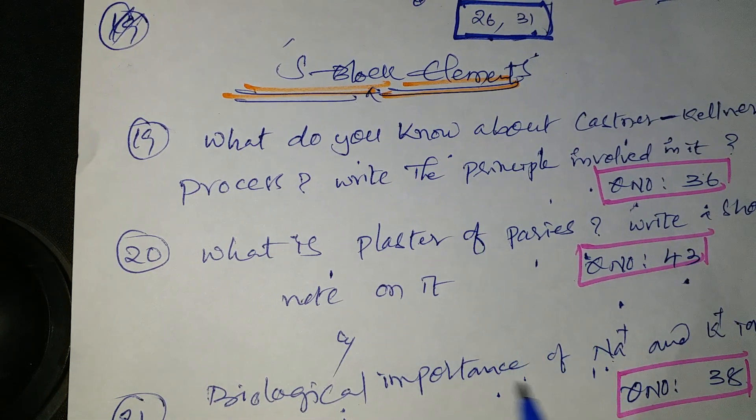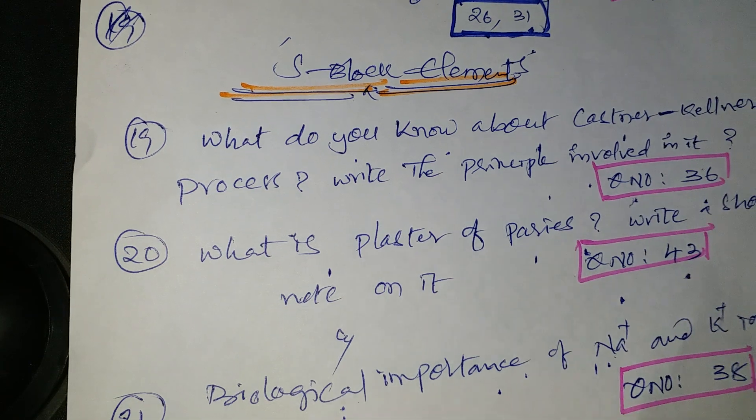Next question: biological importance of sodium ions and potassium ions — question number 38. In S-block elements I gave only three questions, and these are the most important ones.